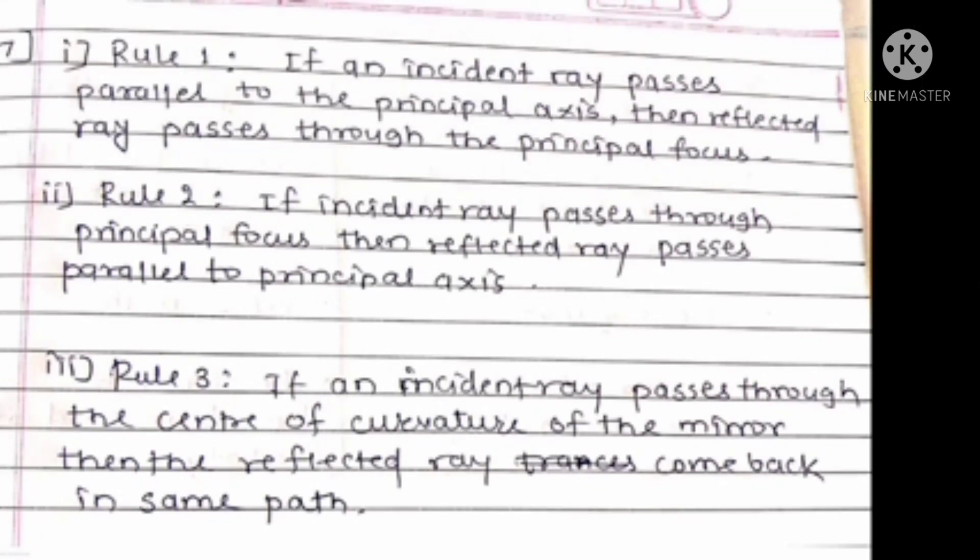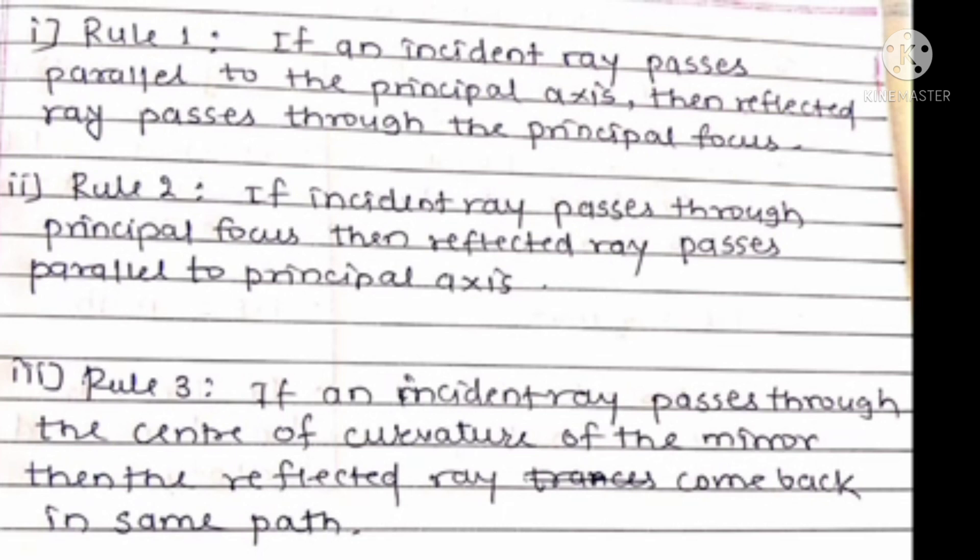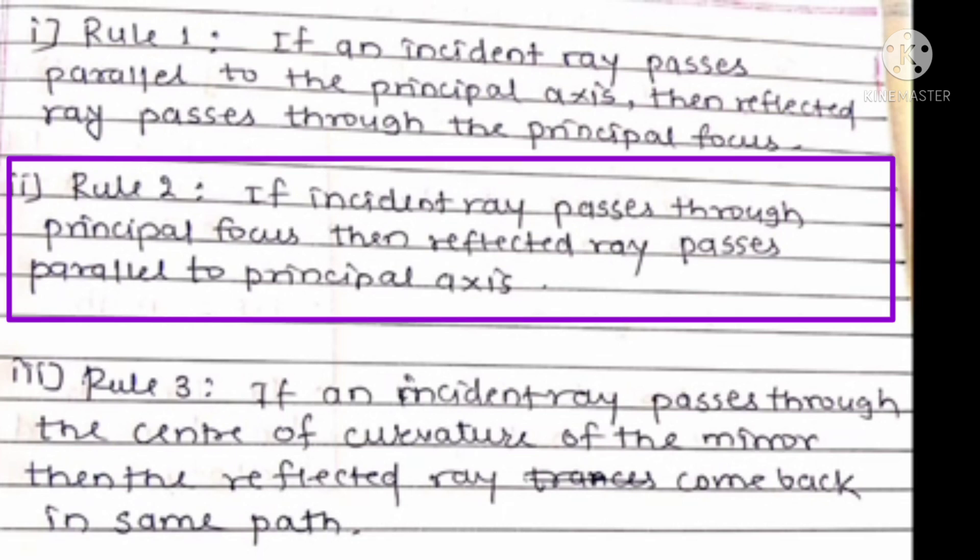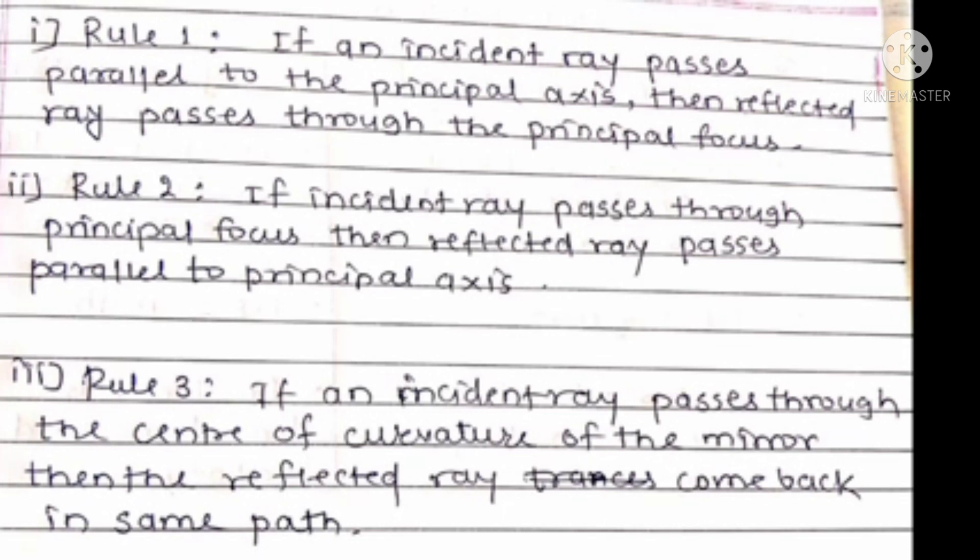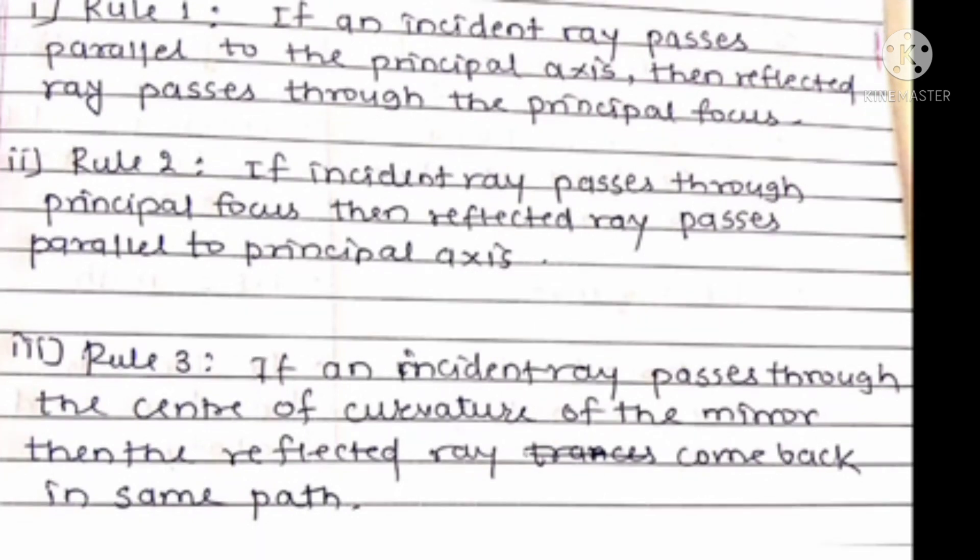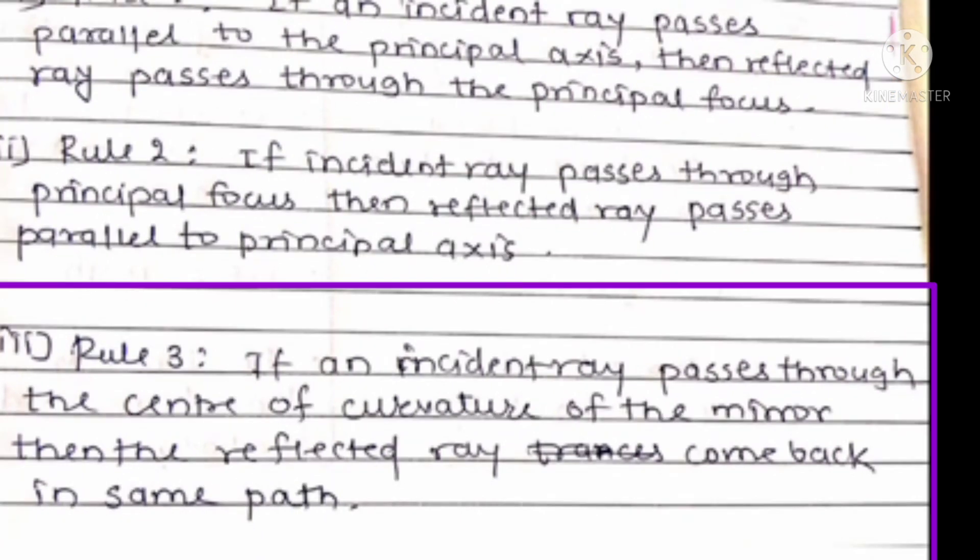Rule first: If an incident ray passes parallel to the principal axis, then reflected ray passes through the principal focus. Second rule: If an incident ray passes through the principal focus, then reflected ray passes parallel to the principal axis. Third rule: If an incident ray passes through the center of curvature of the mirror, then the reflected ray comes back in the same path.